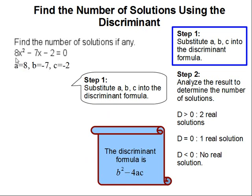Now, a is the coefficient of x squared, b is the coefficient of x, and c is the whole number. So a is 8, b is negative 7, and c is negative 2.